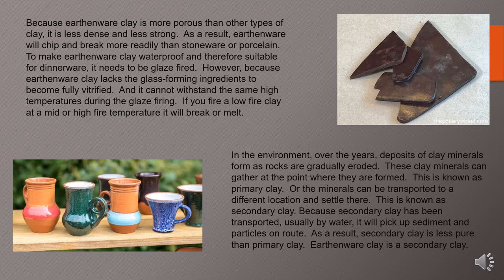In the environment, over the years, deposits of clay minerals form as rocks are gradually eroded. These clay minerals can gather at the point where they are formed — known as primary clay — or the minerals can be transported to a different location and settle there, which is known as secondary clay. Because secondary clay has been transported, usually by agents like water, it picks up sediments and particles along its route. As a result, secondary clay is less pure than primary clay, and earthenware is one of those secondary clays.